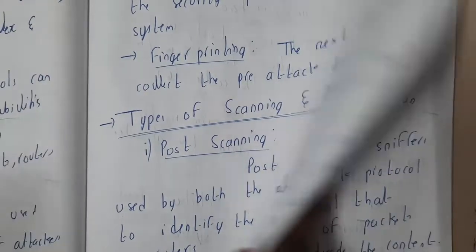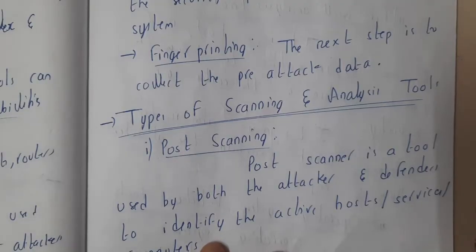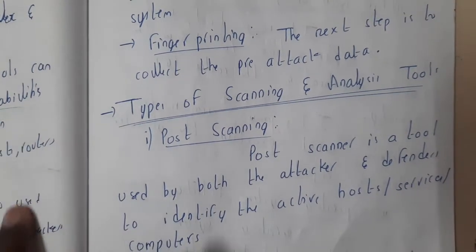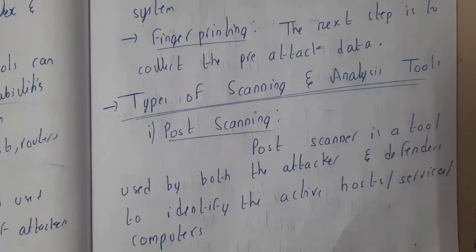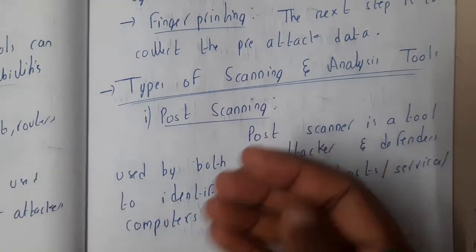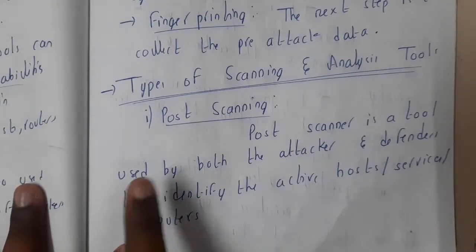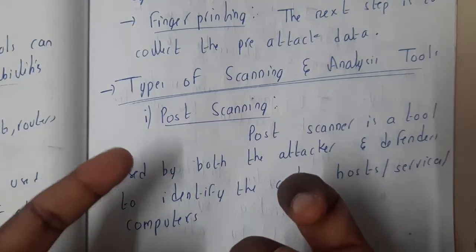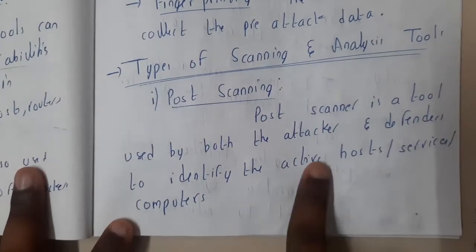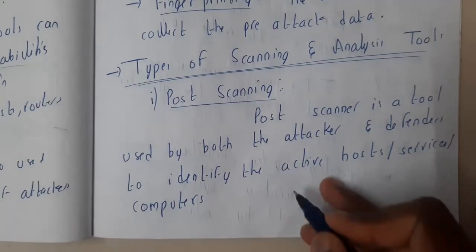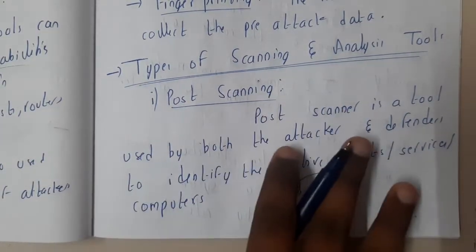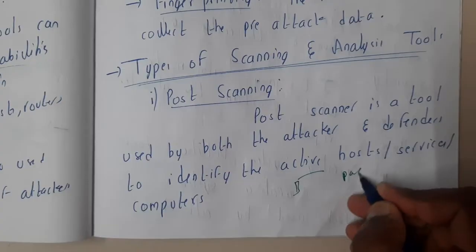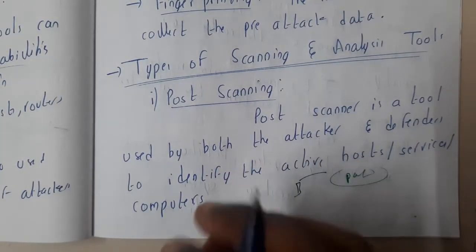We'll be discussing six tools, so please make sure you remember their names and explanations as they are really important. The first tool is port scanning. From the name, after something happened you will be scanning it. Port scanning is a tool used by both the attacker and the defender to identify active hosts and services in the network. In a huge network, it identifies how many systems, hosts, or ports are active.